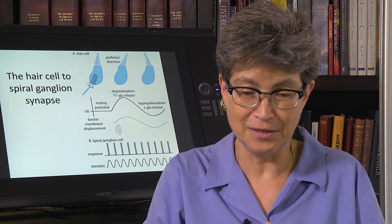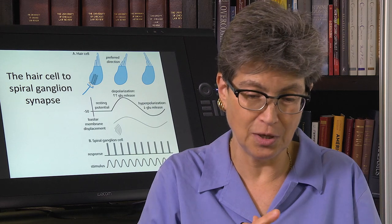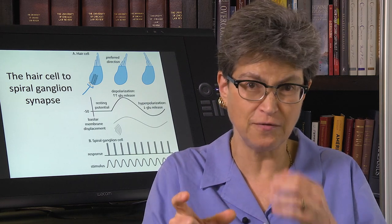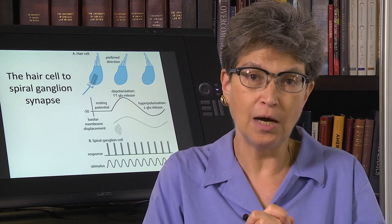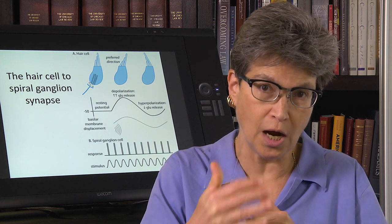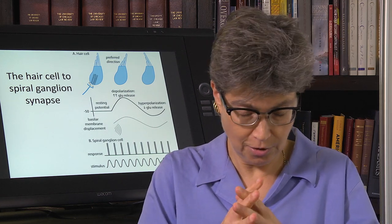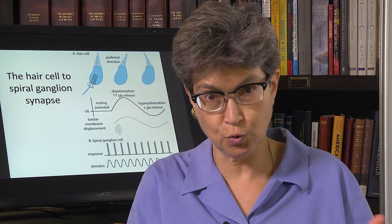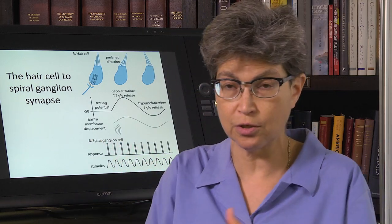We can get an infection of that nerve, a neuritis. And even more commonly, there are these what are called vestibular schwannomas that used to be called acoustic neuromas.